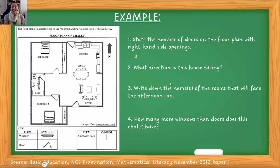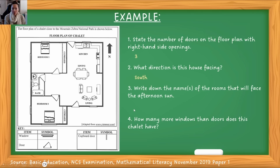What direction is this house facing? When looking at which direction a house is facing, pay attention to north. The front door will tell you which way the house is facing. So here I know north is this way, and here is the front door coming into the living room. This front door is facing in the opposite direction to north, which means it is facing south. So when they ask in which direction the house is facing, that is always asking: what is the front door of the house, and in which direction is that front door facing?